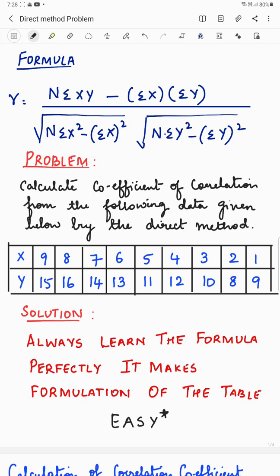The first one is the direct method and the second one is assume mean method, where we assume the mean and we find out using assume mean method. Their formula will change. So then let's understand direct method.